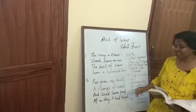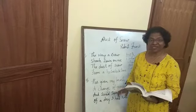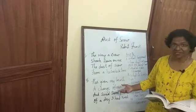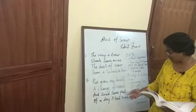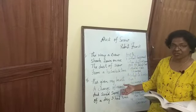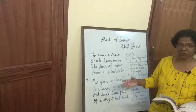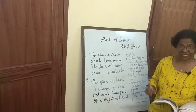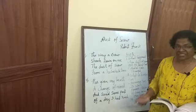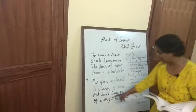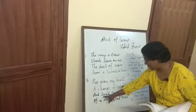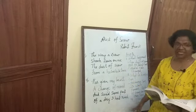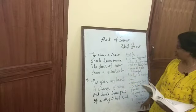There is also a poetical device in this poem — alliteration. Alliteration is when two words have the same first letter. For example, 'same' and 'some' both start with S. So this is an alliteration.